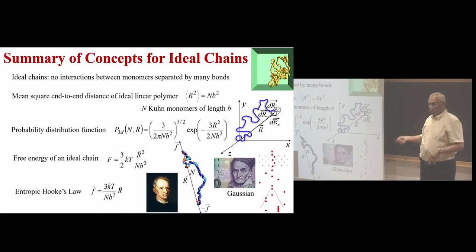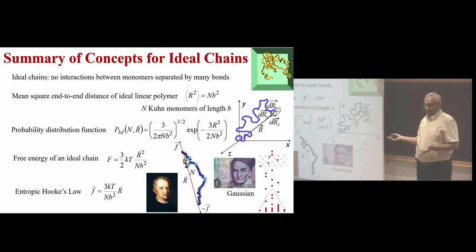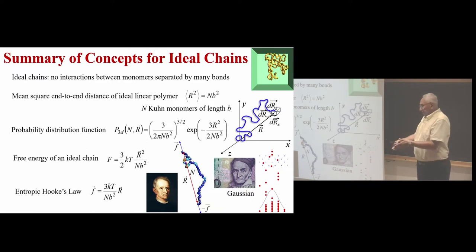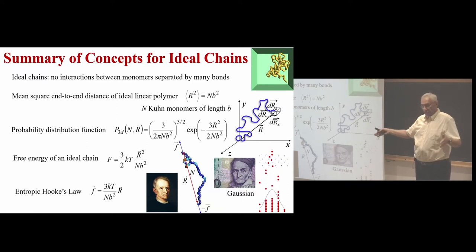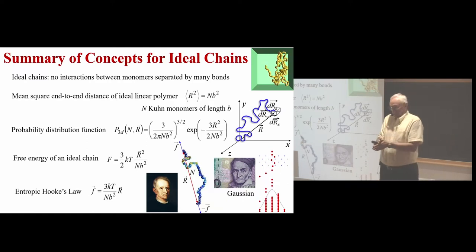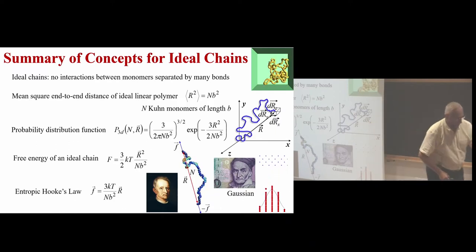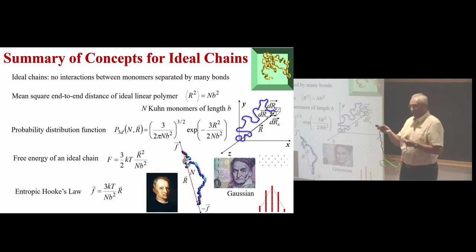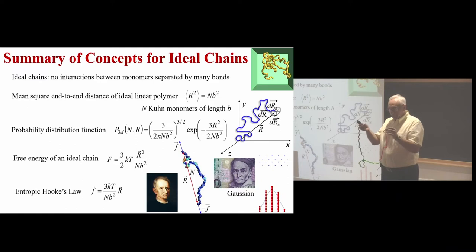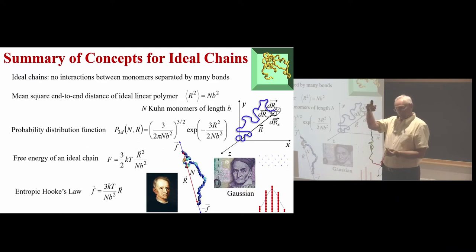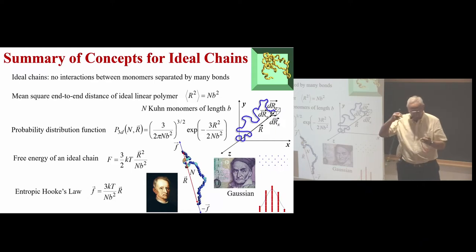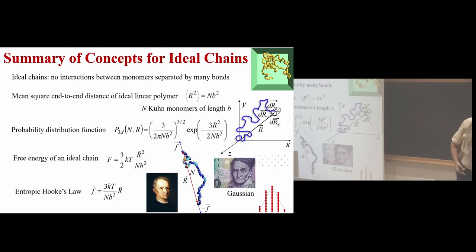If you talk about strain for a single chain, you can define it — then it would be the deformation between initial and final ends, because a chain never starts at zero. It fluctuates constantly. To define a strain you would need to use magnetic tweezers: put it at some distance, then deform it. But initially in a liquid, it's just everywhere — fluctuating. Sometimes those bonds reverse; we'll talk about that.